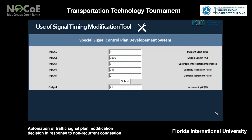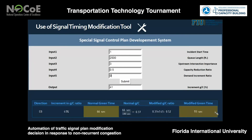The software gives an output of a 41% G-over-C ratio increment. So if the normal green time is 66 seconds and the normal G-over-C ratio is 0.37, we increase the G-over-C ratio by 41%, giving us 0.52 and a modified green time of 93 seconds. In this case, we increase the eastbound green time from 66 seconds to 93 seconds.